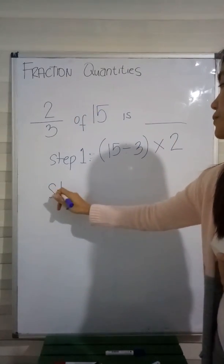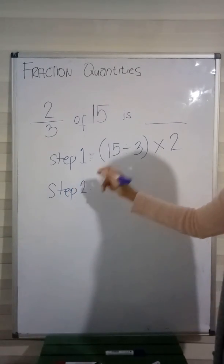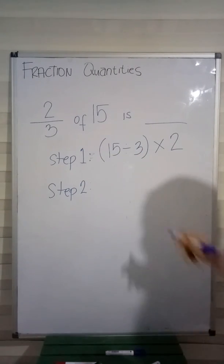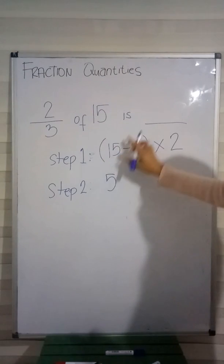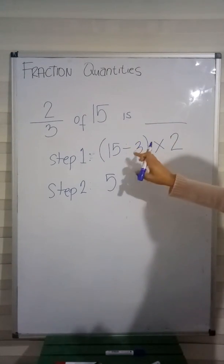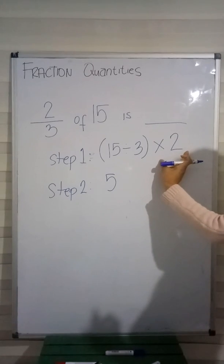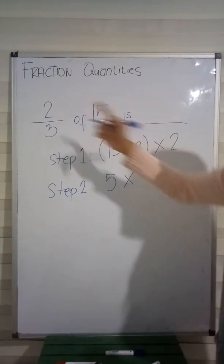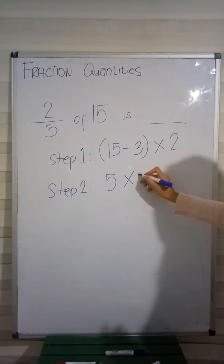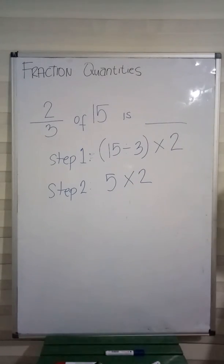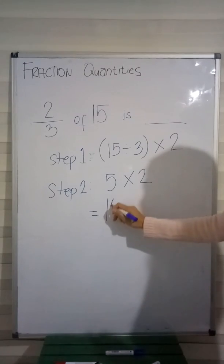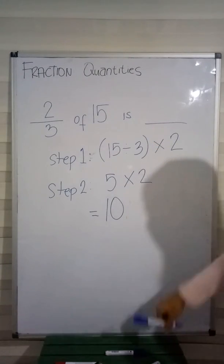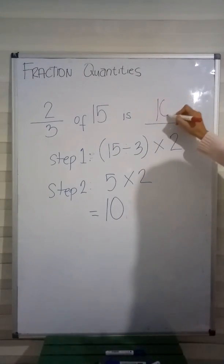Step 2: we divide first. 15 divided by 3 — correct, it's 5. We do the calculation inside the parenthesis first: 15 divided by 3 is 5. We still have times 2, so Step 2 is to multiply by our numerator. Our numerator is 2, so we multiply by 2. 5 times 2 — the answer is 10. Therefore, 2 thirds of 15 is 10.